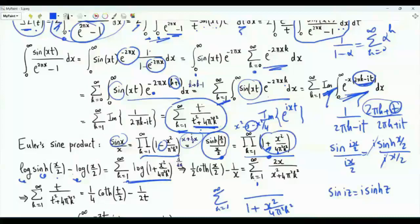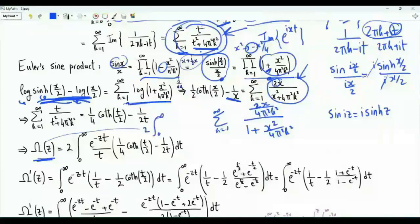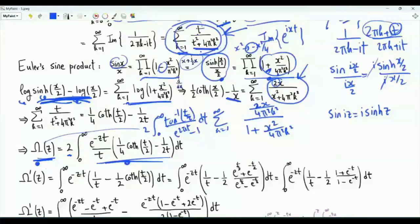Comparing with the sum in our problem, the sum of t over t squared plus four pi squared k squared equals one-fourth coth(t/2) minus one over two t. We substitute this into the integral omega of z, which equals two times the integral from zero to infinity of the inverse tangent of t over z divided by e to the two pi t minus one. Differentiating both sides with respect to z, the right-hand side gives the integral from zero to infinity of minus t times e to the minus zt over t, multiplied by one-half coth(t/2) minus one over t, with a sign change from the bracket.